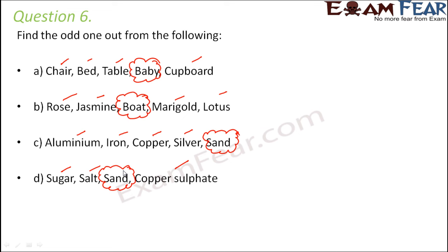I hope you are getting an idea about how sorting materials is important and how sorting based on properties can help us. As an assignment, look around, see different objects, find out their properties, and think about why a bottle is made of plastic or why your pen is made of metal. Try to analyze things on your own and your understanding will be better. With this we conclude this lesson.